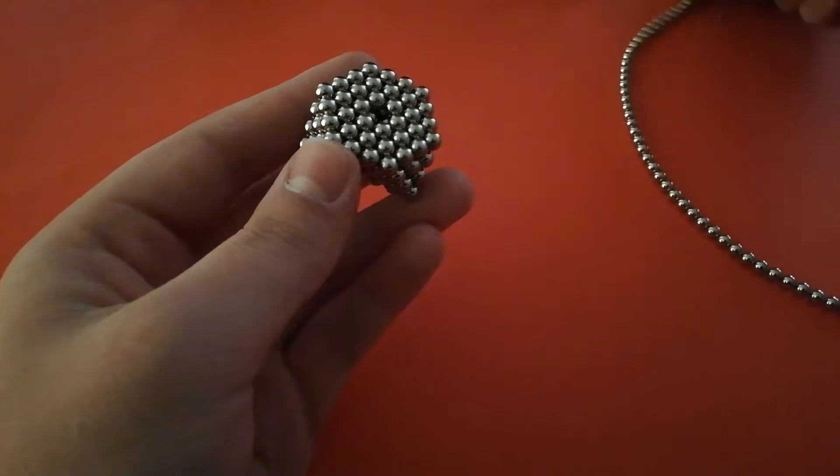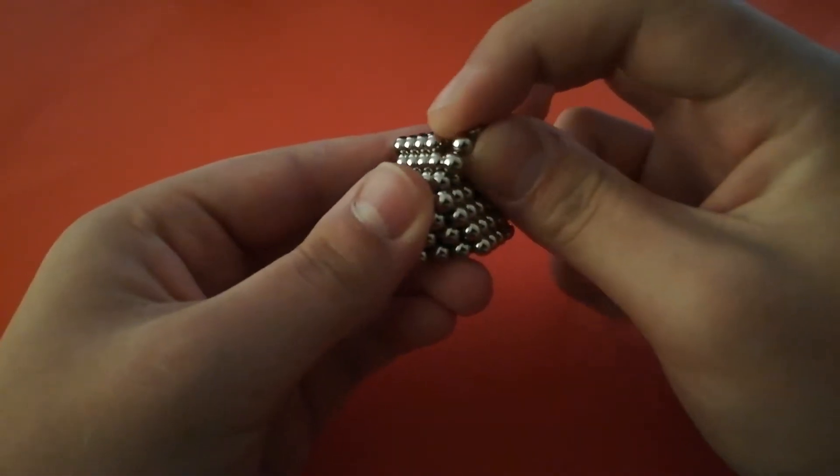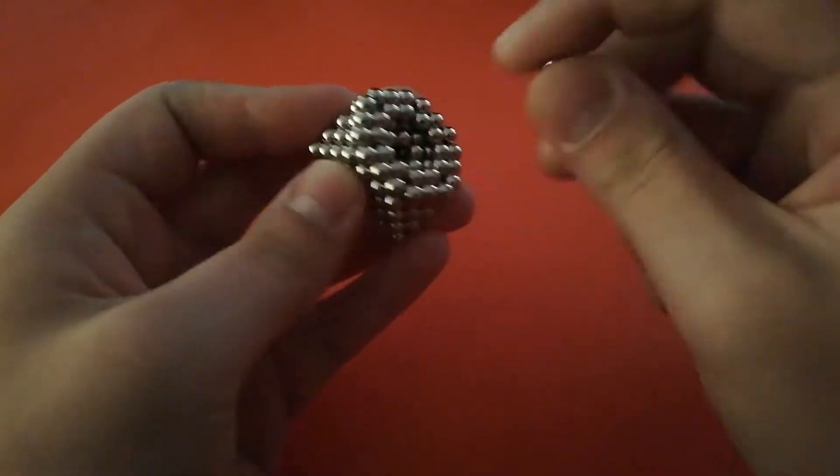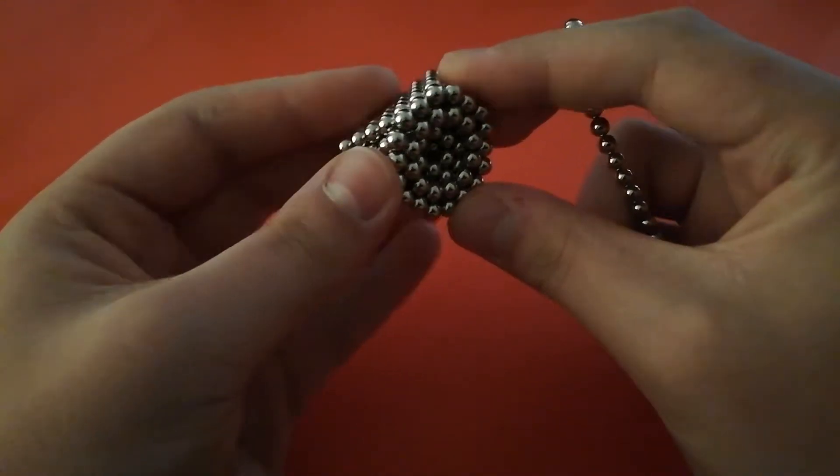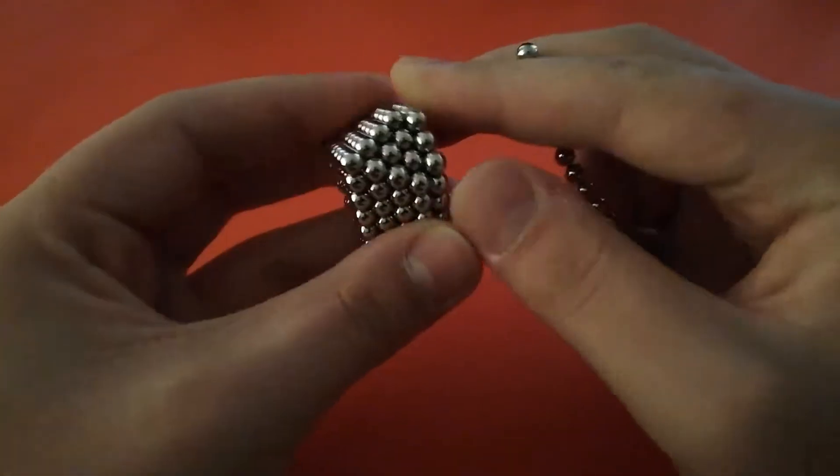You can then flip your chain of magnets around for ease and continue again, wrapping first around the outside and the inside. This time you want to make sure that you don't pinch the wrong three edges together because you'll